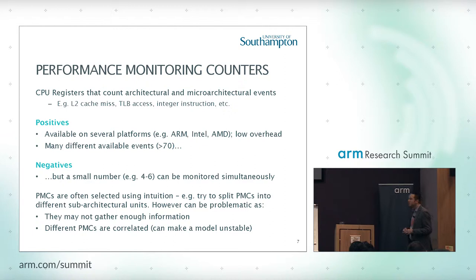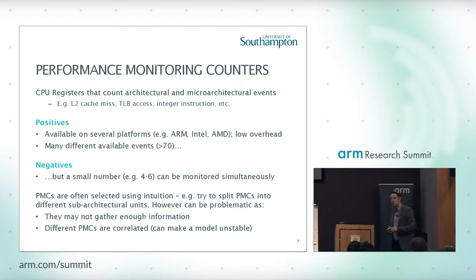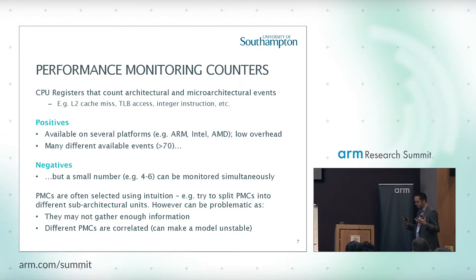PMCs, or performance counters, are registers in the CPU that count various architectural and micro-architectural events. They are widely available across lots of different platforms and manufacturers — not always easy to obtain, but reasonably low overhead when you do. There are lots of different events available, typically over 70 describing different things going on inside the processor. One negative is you can't monitor all 70 at runtime — you have to pick a smaller number to monitor simultaneously. This is critical in creating our power model.